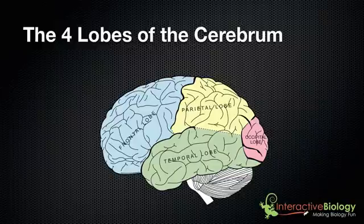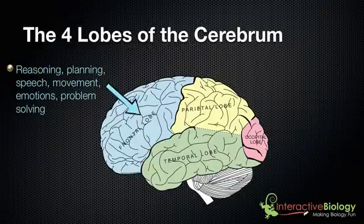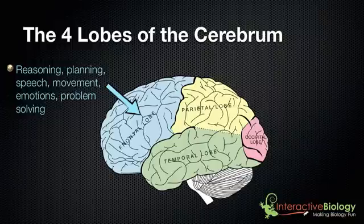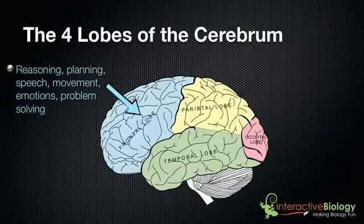The frontal lobe is involved in processes such as reasoning, planning, speech, movement, emotions, and problem solving. These are the types of things that are happening in the frontal lobe.